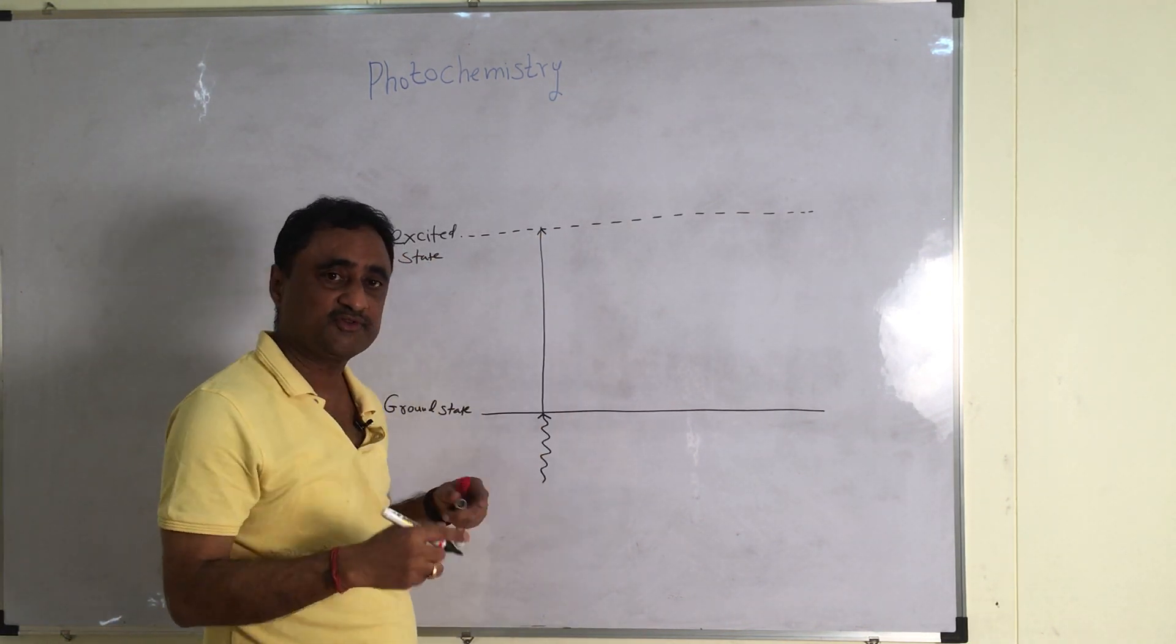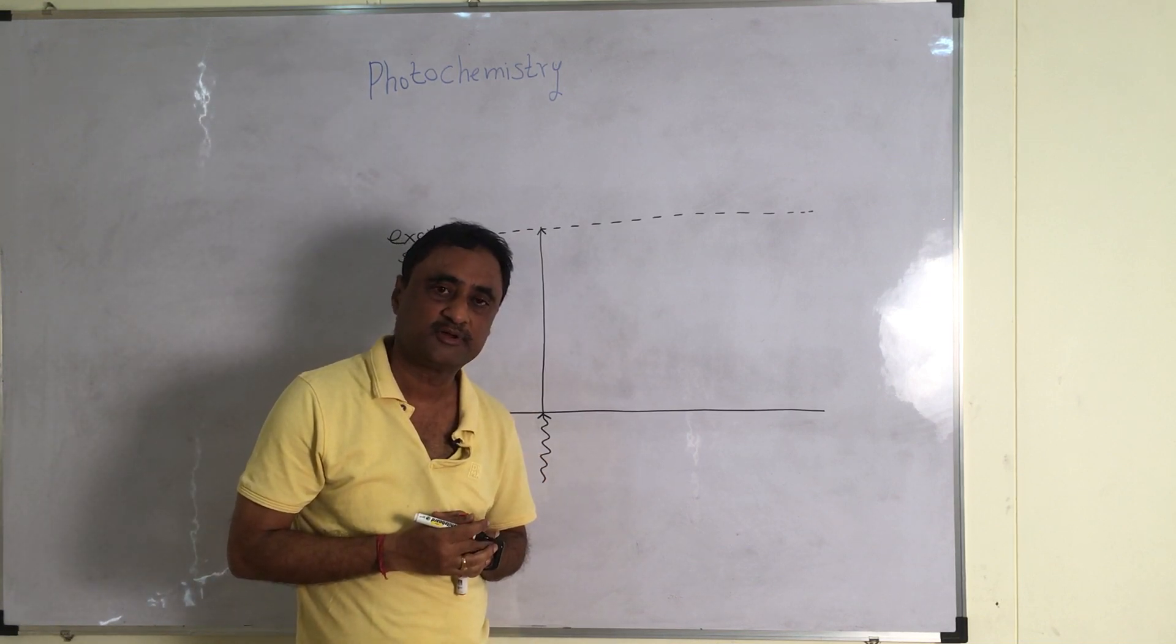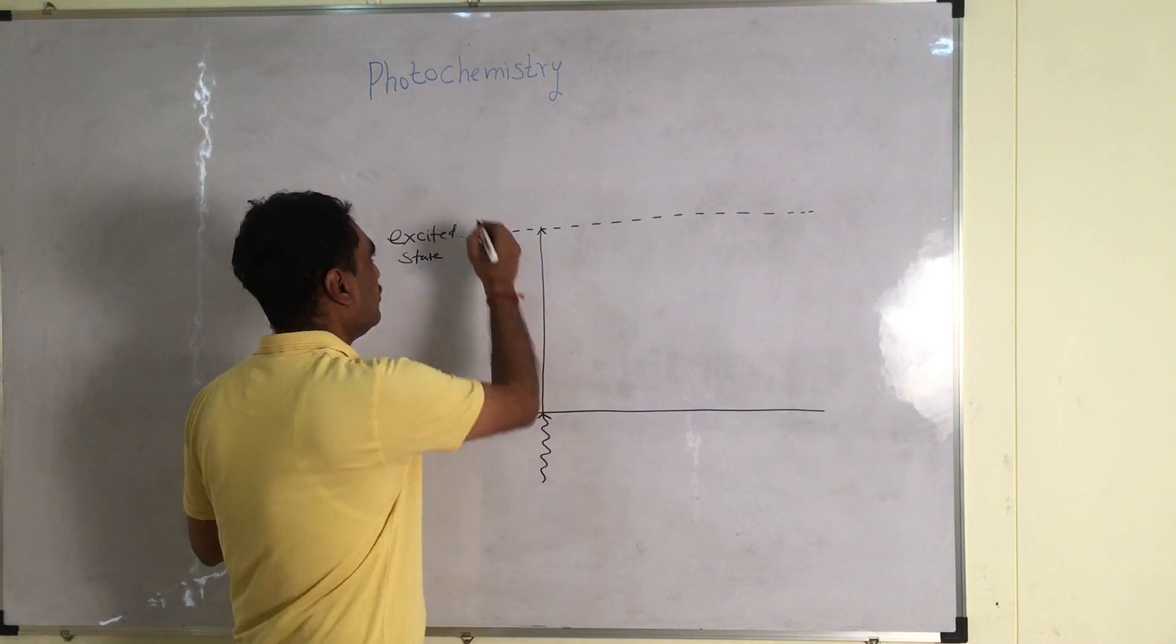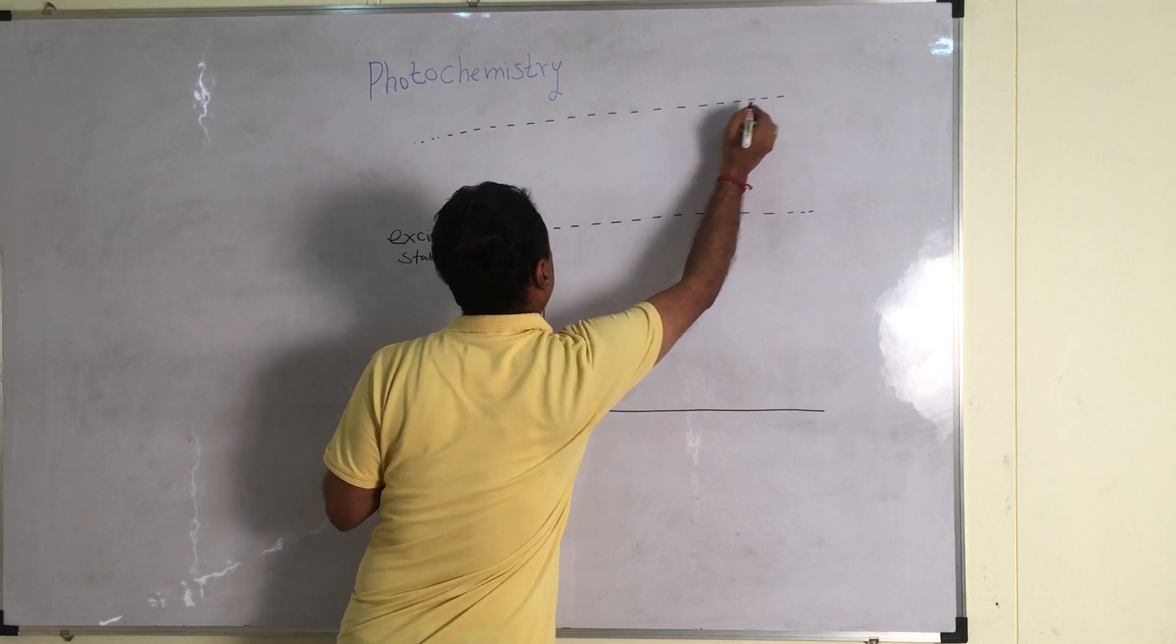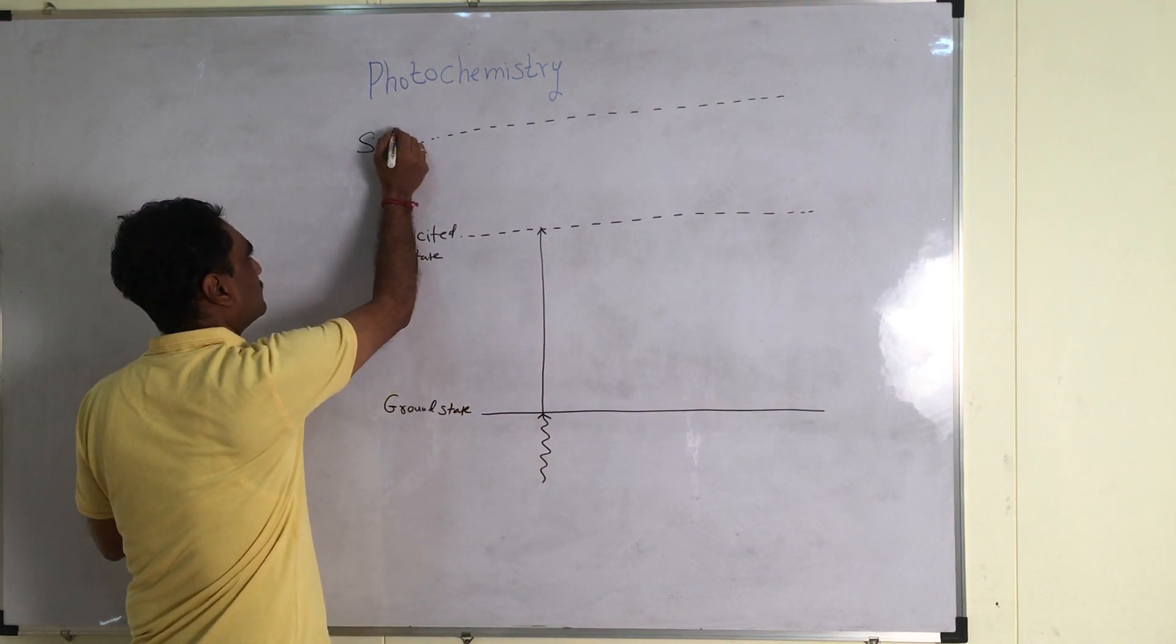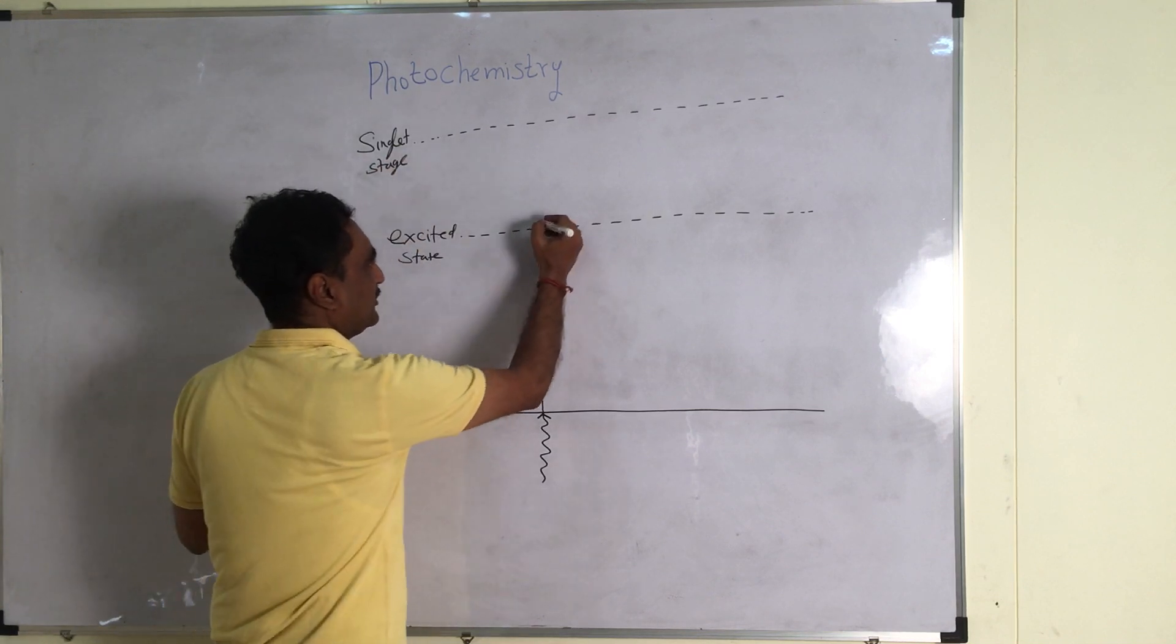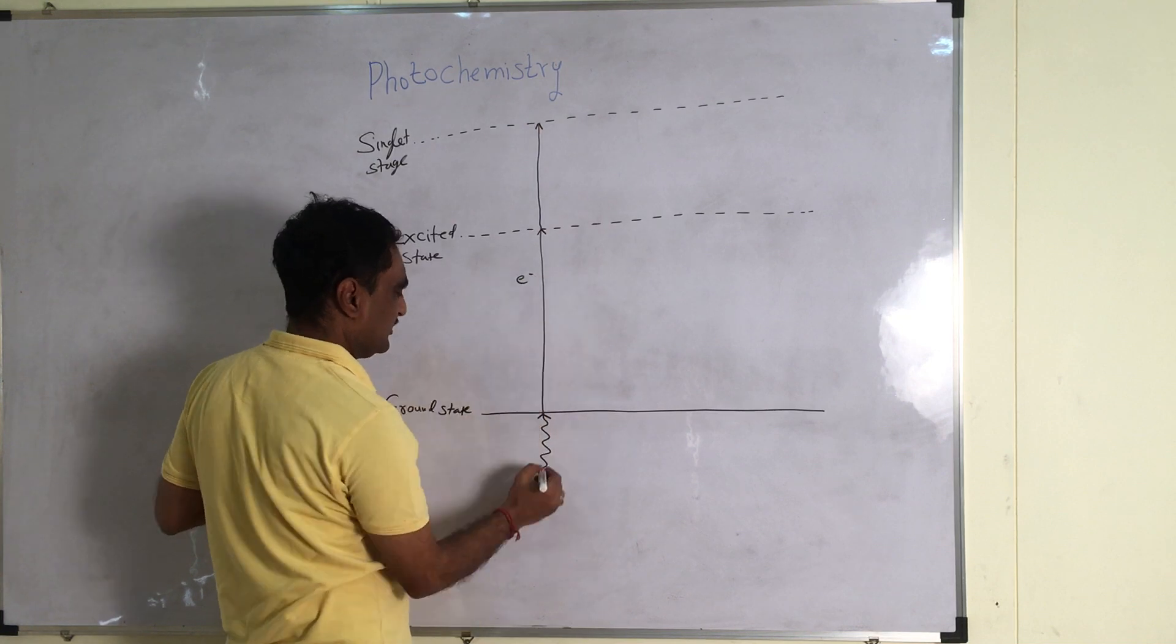But you know very well that in case of blue light, the energy is more. So what will happen? It will go beyond the excited state and there is one more state what we call singlet state. So this electron will be expelled to singlet state.